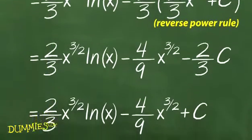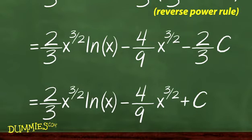In the last step, you replace negative 2 thirds c with c because negative 2 thirds times any number is still just any number.